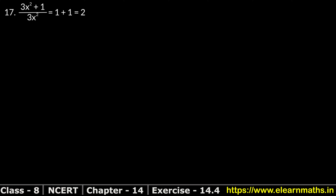Let's do question number 17 of exercise 14.4, that is factorization. Question number 17 is: 3x squared plus 1 upon 3x squared — does 1 plus 1 upon 3x squared equal this or not? We have to determine this.